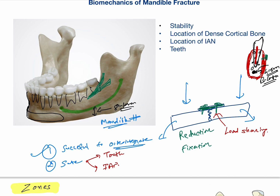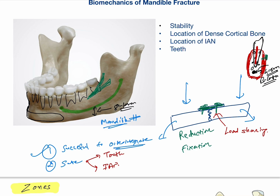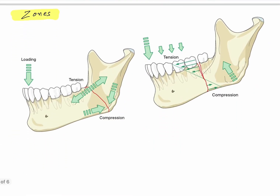Now we know the areas where successful osteointegration can take place, where screws can be safely placed, and where it is not safe to put the osteosynthesis screws. But just placing the mini plate for the sake of placing is not going to be helpful — we also have to see that it can successfully hold the fracture fragments together. For that we have to understand the biomechanics of the forces acting on the mandible.